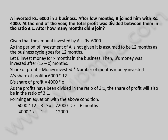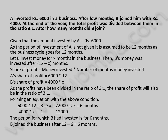Forming an equation with the above condition: 6,000 into 12 divided by 4,000 into X is equal to 3 by 1. This implies X is equal to 72,000 by 12,000, which implies X is equal to 6 months. The period for which B had invested is 6 months. B joined the business after 12 minus 6 is equal to 6 months.